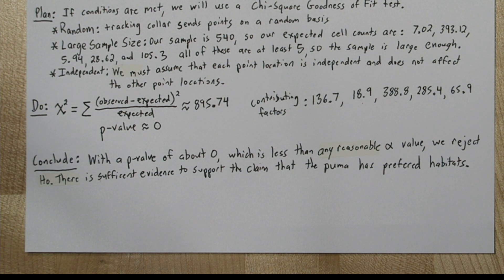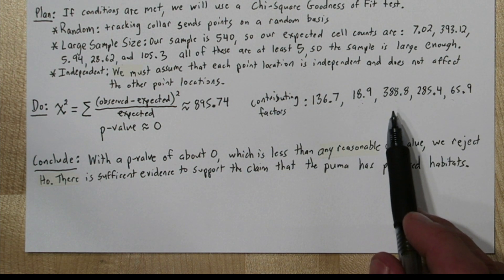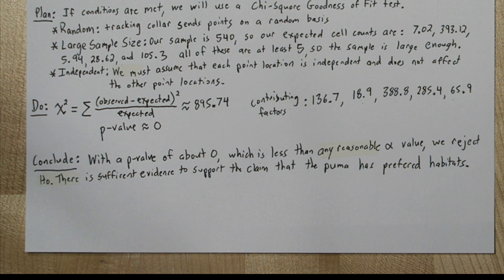Now we're going to do some follow-up analysis. If we look at our contributing factors again, we already noted that shrub was our highest contributing factor. This was because the observed proportion of time the puma spent in the shrub was about ten times the actual amount of shrub in its territory.